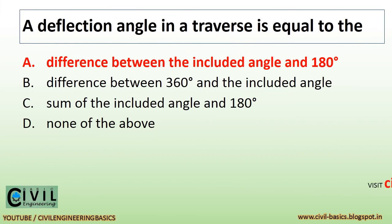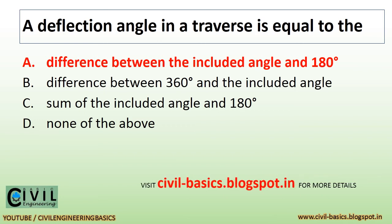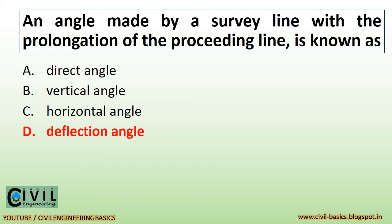A deflection angle in a traverse is equal to the difference between the included angle and 180 degrees. An angle made by a survey line with the prolongation of the preceding line is known as deflection angle.